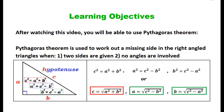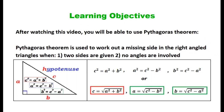Generally, the longest side of a right-angled triangle, which is called hypotenuse, is labeled as c, and the two shorter sides are labeled as a or b interchangeably. As mentioned before, this theorem states that c squared is equal to a squared plus b squared. This formula can actually be rearranged in quite a few different ways — for example, a squared equals c squared minus b squared, or b squared is equal to c squared minus a squared, or simply c equals the square root of a squared plus b squared, or a equals the square root of c squared minus b squared, or b equals the square root of c squared minus a squared, depending on which side we are going to work out.